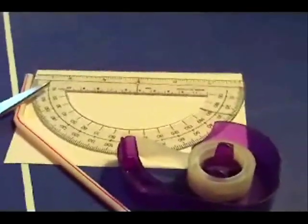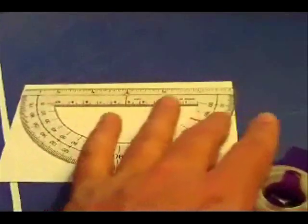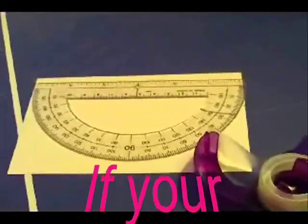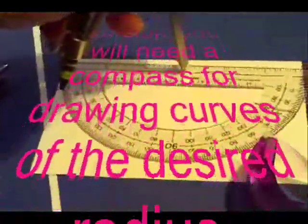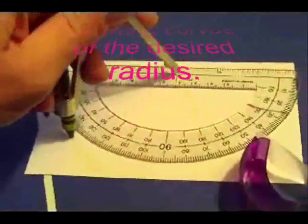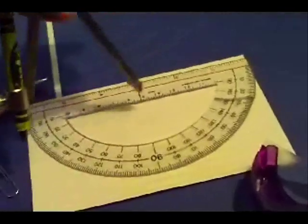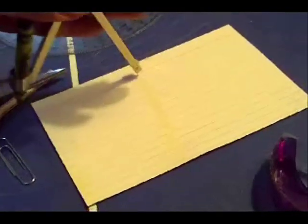Now, in the event that you do not have a protractor this size, but your protractor happens to be a bit smaller or larger, that it does not span the length of your note card end-to-end, you can instead trace out the curve using a compass to accomplish the same goal.